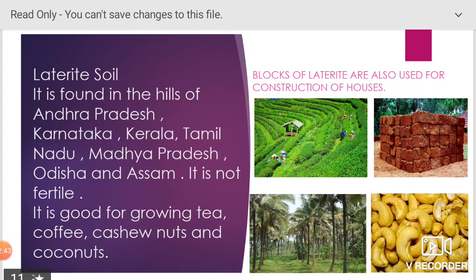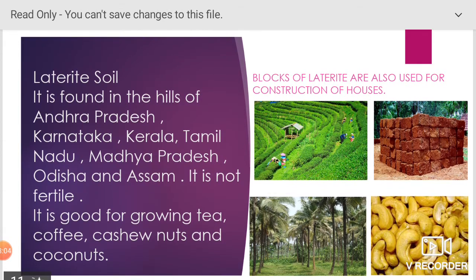Laterite soil is found in the hills of Andhra Pradesh, Karnataka, Kerala, Tamil Nadu, Madhya Pradesh, Odisha, and Assam. It is not fertile. It is good for growing tea, coffee, cashew nuts, and coconuts. Blocks of laterite are also used for construction of houses.